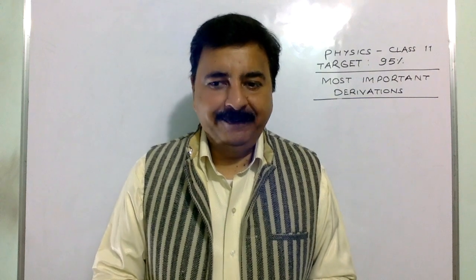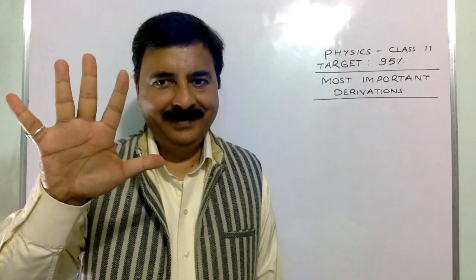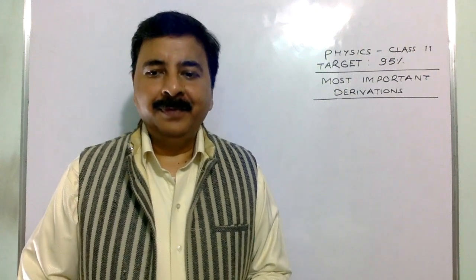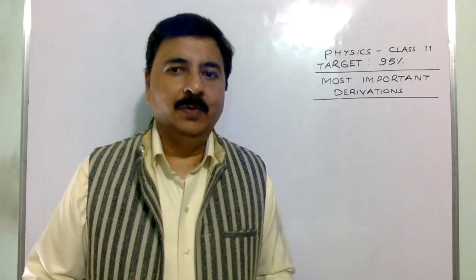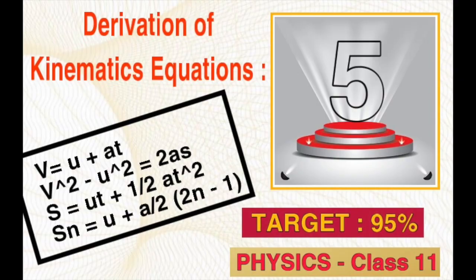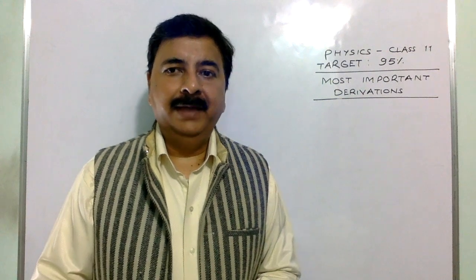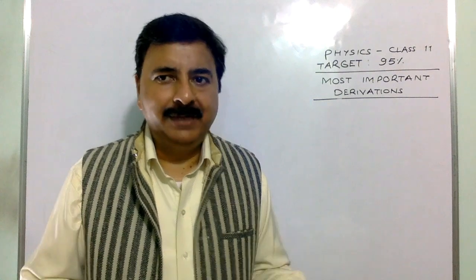Now we are going towards the top five derivations. Derivation number 5 is from kinematics, unit number two: V = U + AT, S = UT + ½AT², V² − U² = 2AS, and Sₙ = U + A/2 × (2N − 1). Remember, these derivations you have to cover with the help of a graph, as required in the latest syllabus. One derivation from these is also sure.